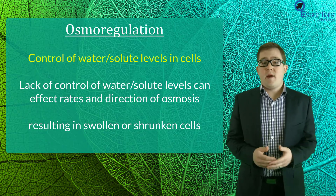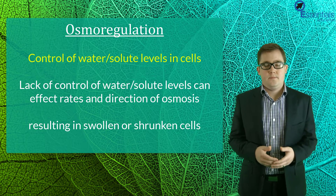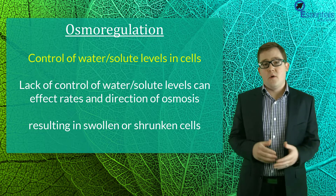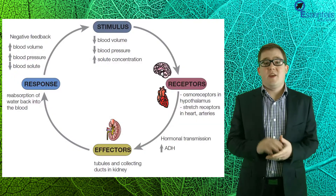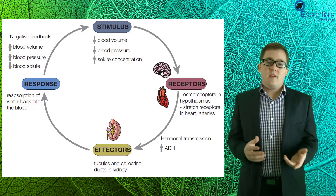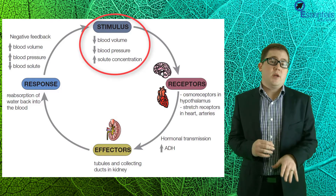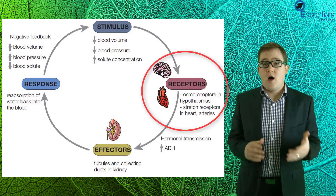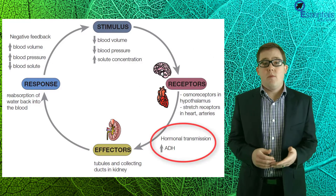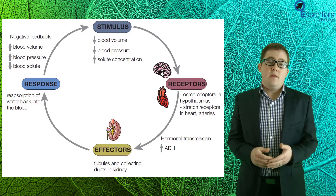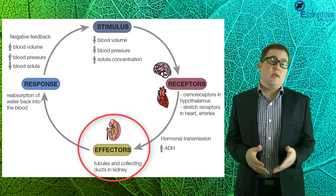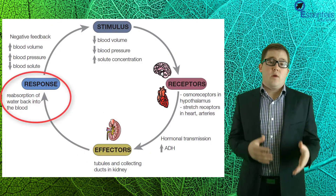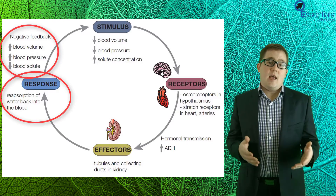The last example is what's called osmoregulation, or the control of water and solute levels in cells. Osmoregulation is really important as changing solute concentrations in cells can affect rates of osmosis, which can cause cells to either shrink or swell. Let's use a diagram to illustrate the specific negative feedback mechanism. If the stimulus is a decrease in blood volume, a decrease in blood pressure, and therefore an increase in solute concentration in cells, this is detected by osmoreceptors — a type of chemoreceptor in the hypothalamus. This stimulates the release of antidiuretic hormone from the pituitary gland into the bloodstream. The antidiuretic hormone then travels to the kidney, where it enables kidney tubules and collecting ducts to remove more water from the filtrate and ensure less is lost in urine. The reabsorption of water then increases volume and pressure and decreases solute concentration — again an example of negative feedback.